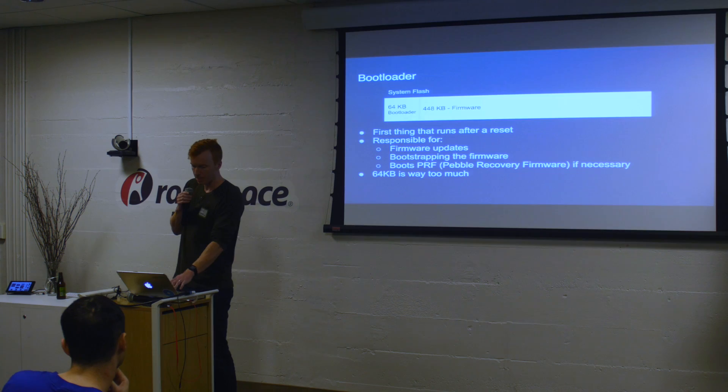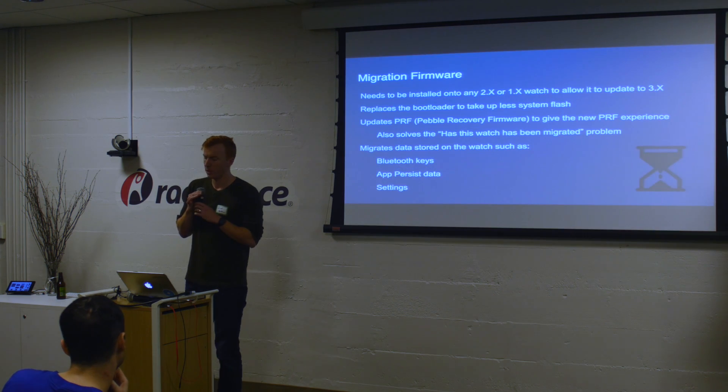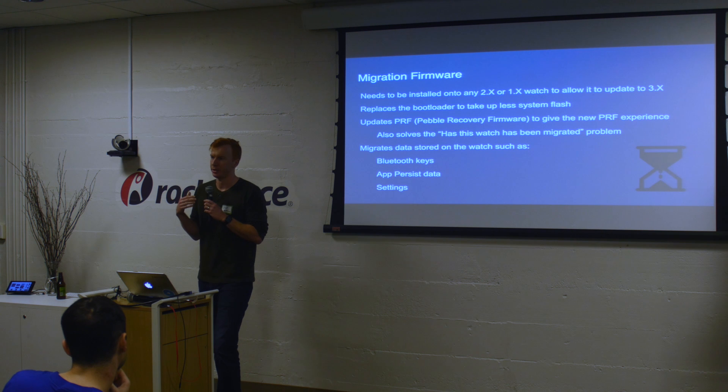We realized as part of 3x on Tintin that actually 64K is way too much. This part of our system that we can't upgrade — because it's the thing that does the upgrading — is wasting all of this space. In order to actually do this, we needed a solution.